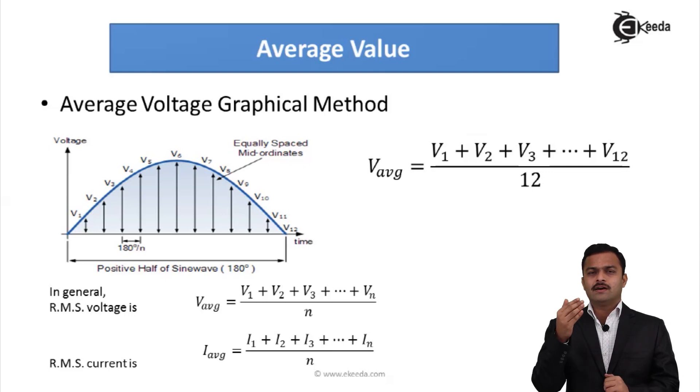Simply I will add them and divide by number of instances we have taken. So that gives rise to this formula. For 12 instances I have V_average as V1 + V2 + V3 up to V12 divided by 12. In general, suppose I am having n number of points, so I will get V_average as V1 + V2 + V3 up to Vn divided by n.